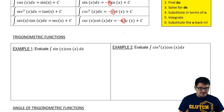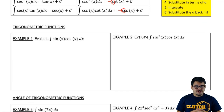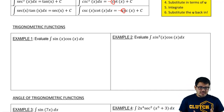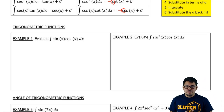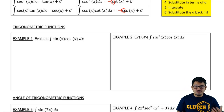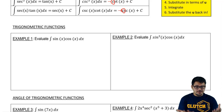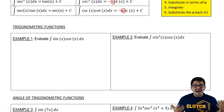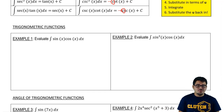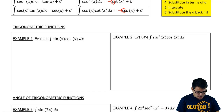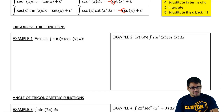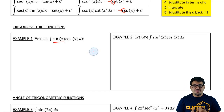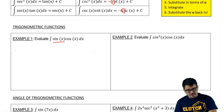Here we have: evaluate the integral of sine times cosine of x. As we discussed, we can pick either sine or cosine to be our u-sub because their derivatives are each other — it doesn't matter. We can pick either one. In example one, I'm just going to pick the first one and let u equal sine.